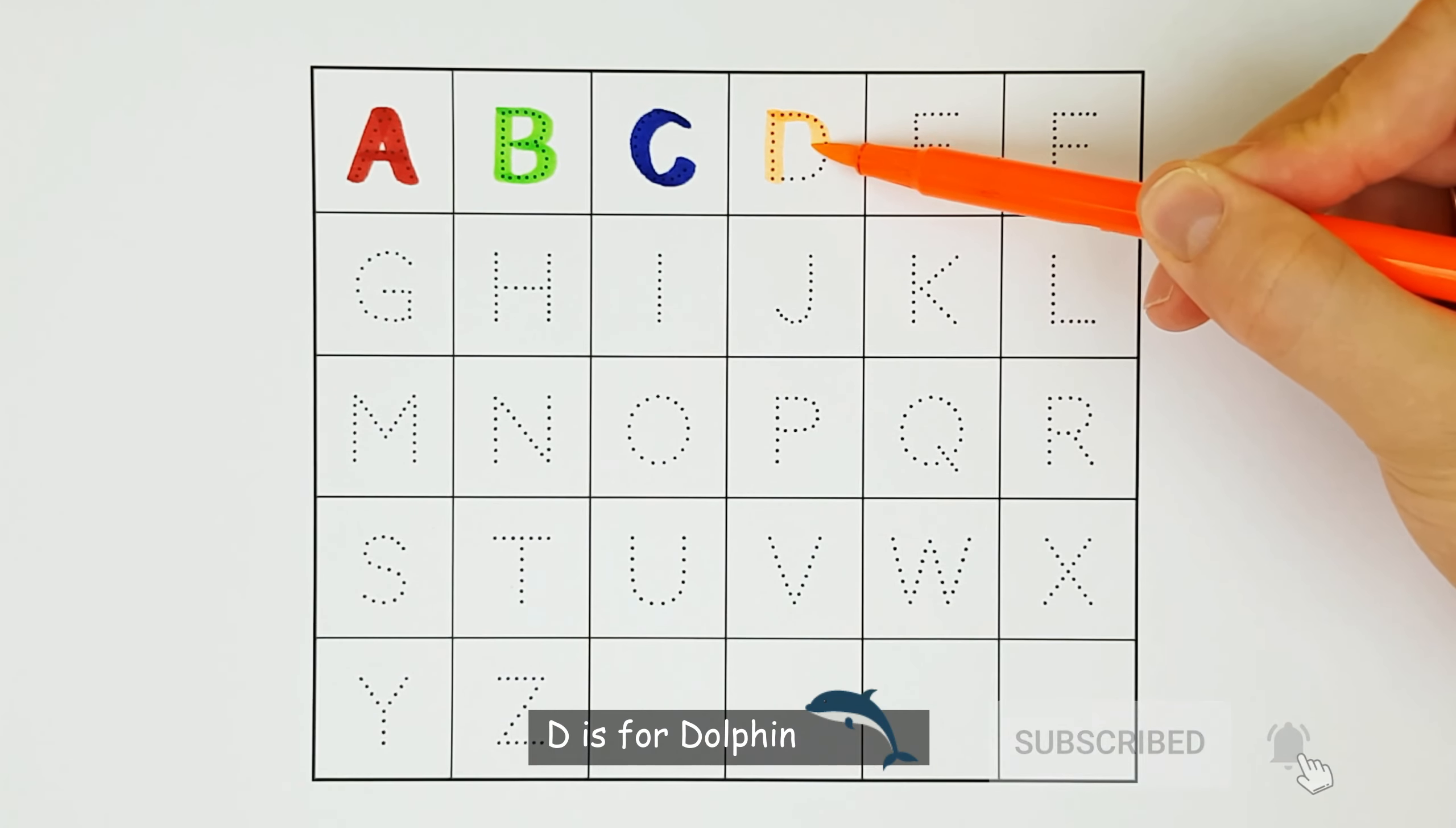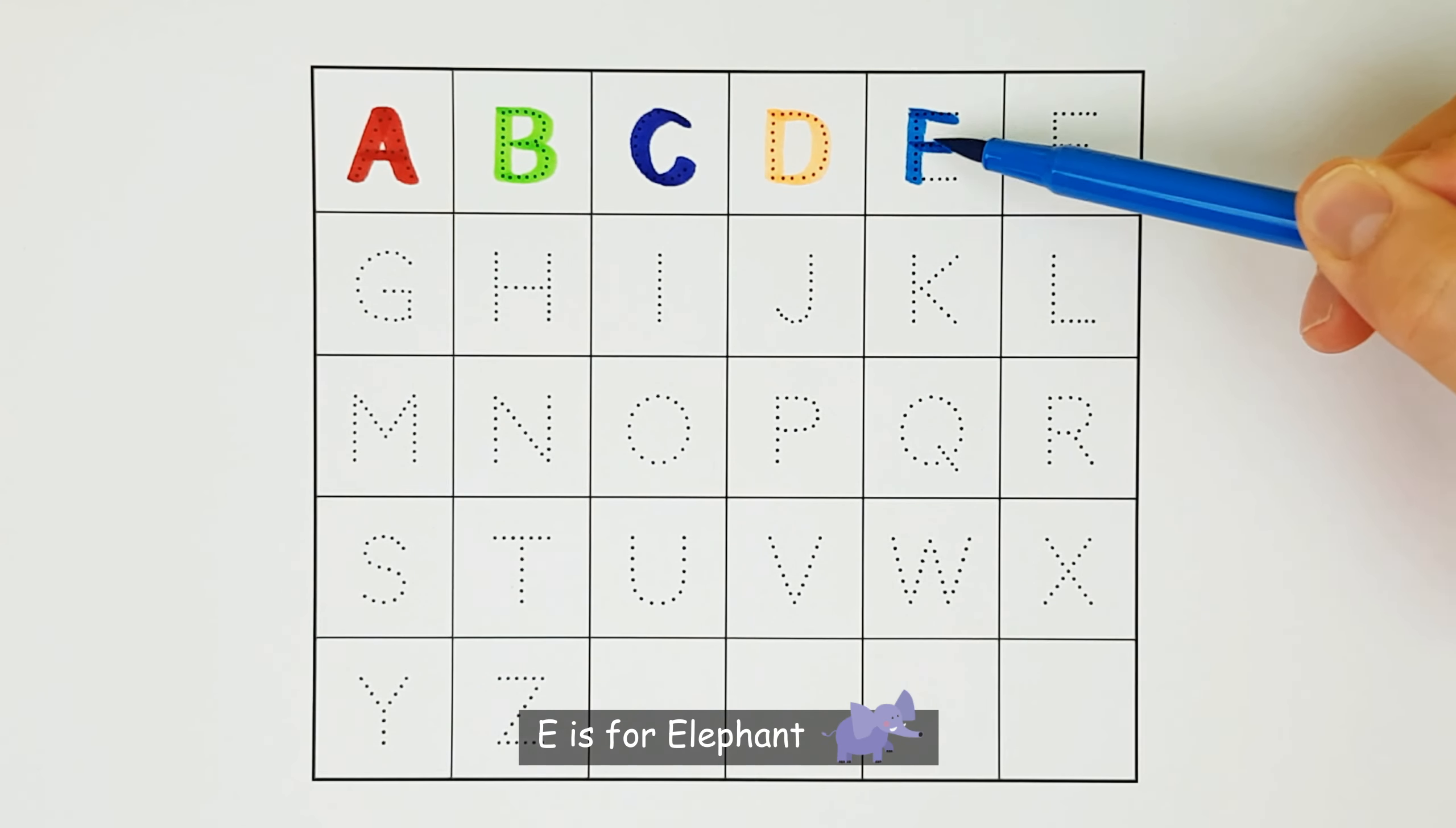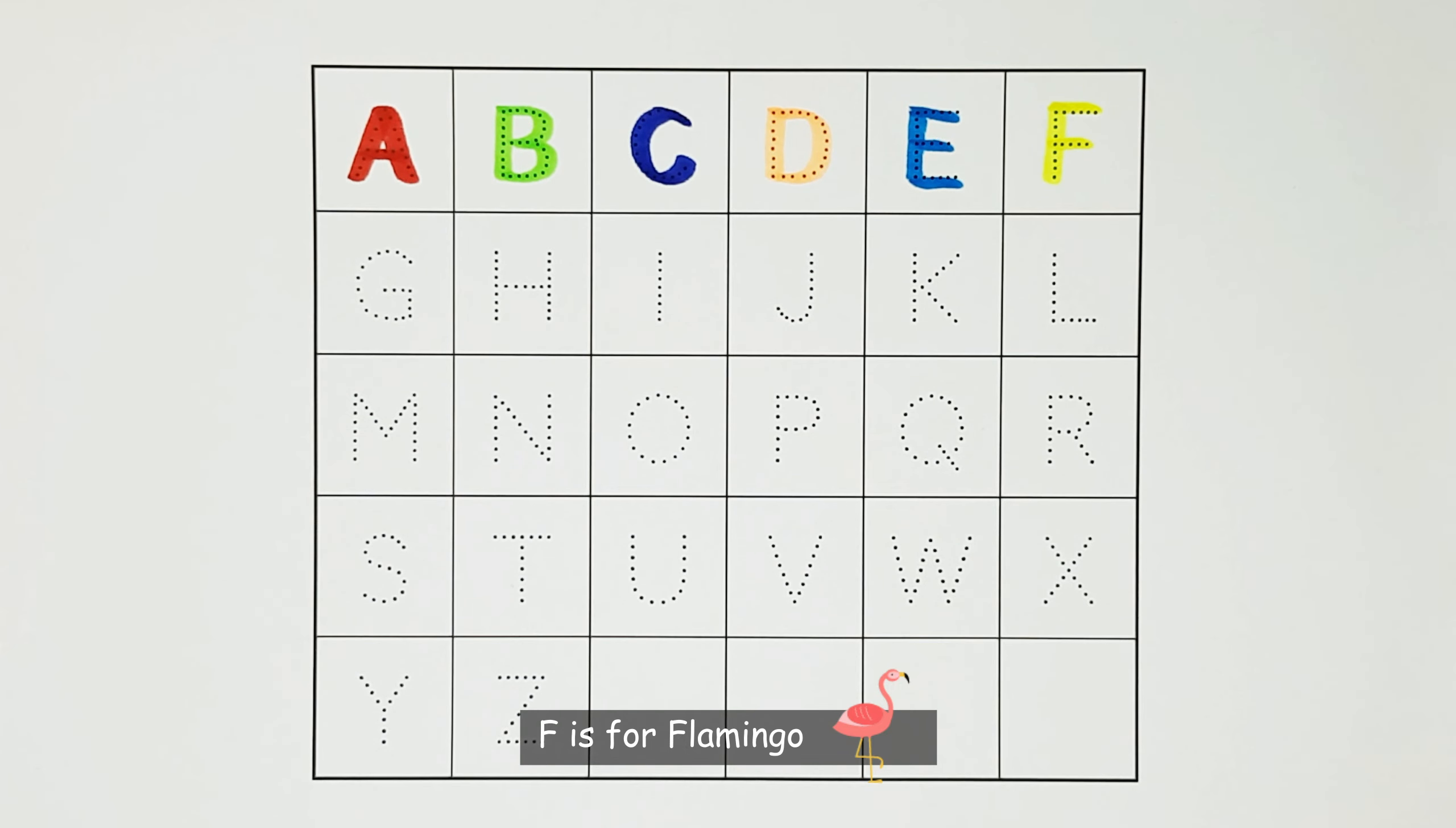D. D is for dolphin. D. E. E is for elephant. E. F. F is for flamingo. F.